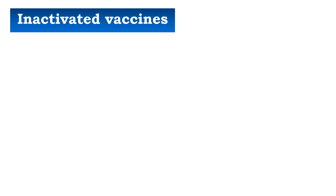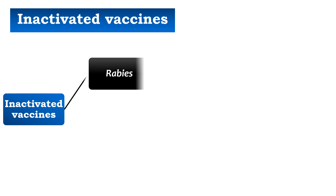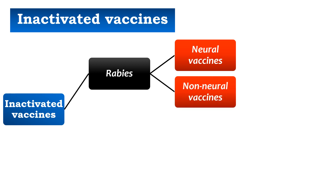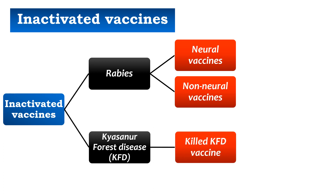Starting with inactivated vaccines, the first disease against which inactivated vaccines are given is rabies. Here we have two categories: number one, neural vaccines, derived from nervous tissue of animals infected with fixed rabies virus; and number two, non-neural vaccines. Against Kyasanur Forest Disease (KFD), we also have an inactivated vaccine — a formalin-inactivated chick embryo vaccine developed at Haffkine Institute, Mumbai, recommended in endemic areas only.